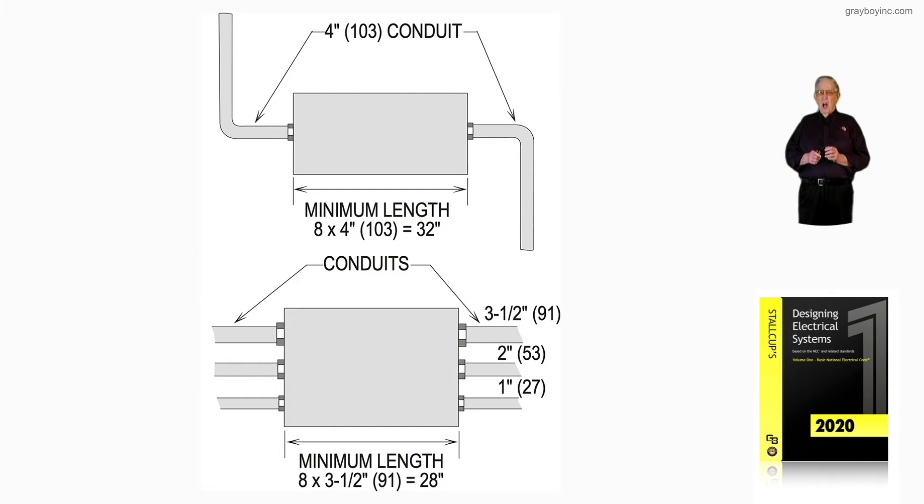Notice the top illustration, it's a straight pull. Now you have two 90s on the conduit, but it's still a straight pull, and it's eight times the size of the conduit. So you have a four-inch conduit, four times eight is 32 inches.